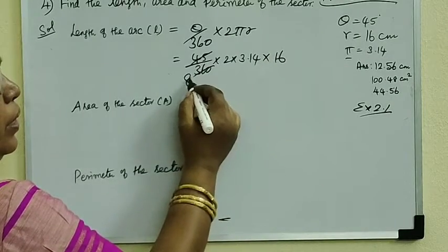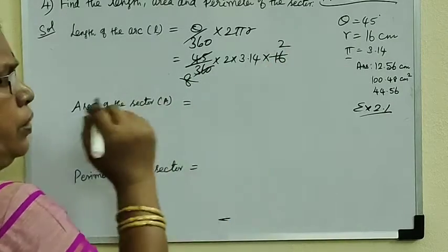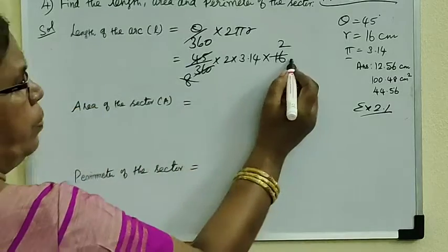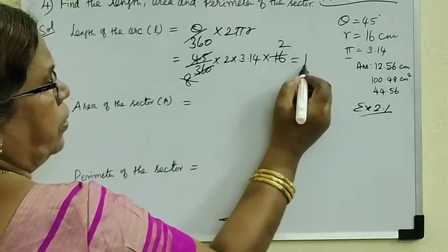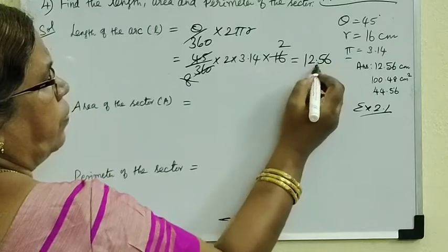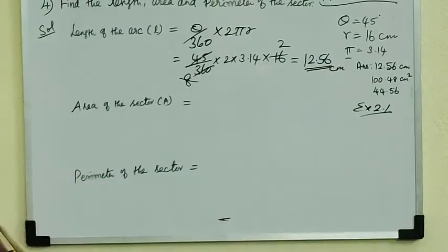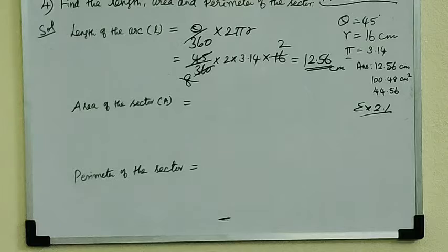Then into R value 16. If you cancel it 8 times, if you cancel it 2, multiply it. Answer for this: 12.56 centimeters. Length is in centimeters.